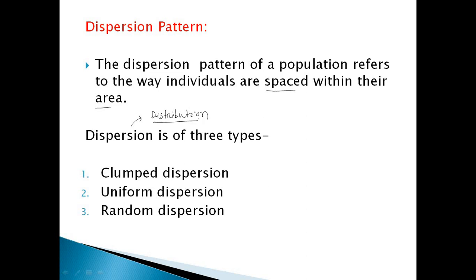There are three main kinds of dispersion pattern of the population. The first one is clumped dispersion, the second one is uniform dispersion, and the third one is random dispersion. From the name, you can get an idea that clumped dispersion means the dispersion is not uniform and the species are aggregated — they form aggregations or clumps in a particular area. This is called clumped dispersion.